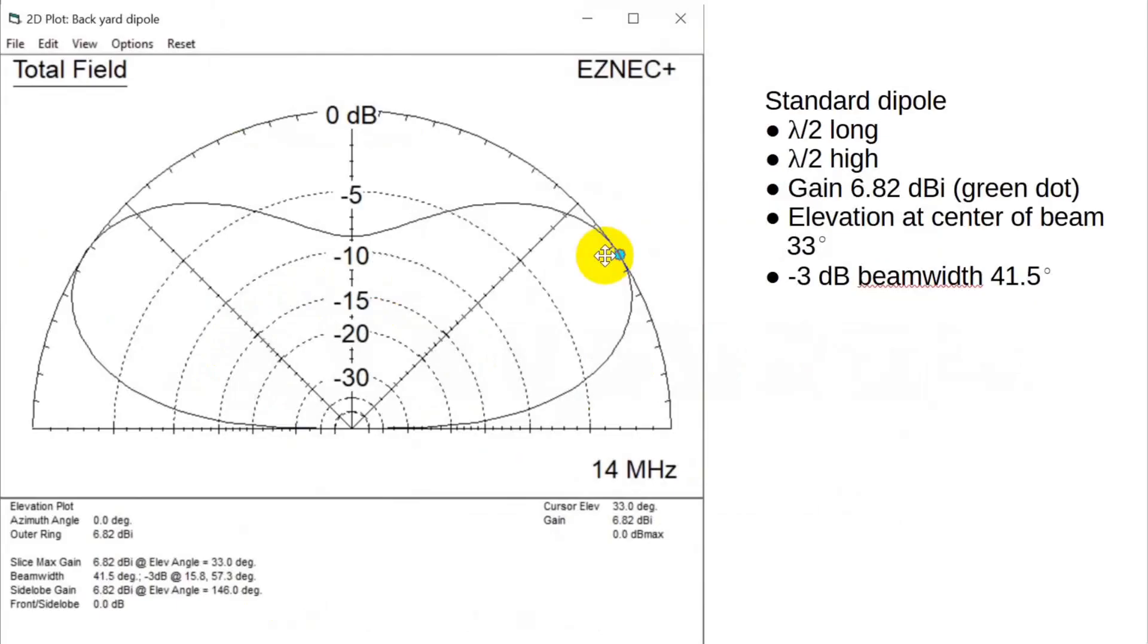This is the elevation plot of, and happens to be a 20 meter dipole, but it doesn't matter what it is. This is a standard dipole, meaning it's half wavelength long and half wavelength high, and this is the elevation at which this puts the most energy into this part here. You'll note that if you go higher in frequency, this middle part will start to come up, and you'll start creating additional side lobes over here. The 3 dB beam width is 41.5 degrees, and that goes from 3 dB down to 3 dB down.